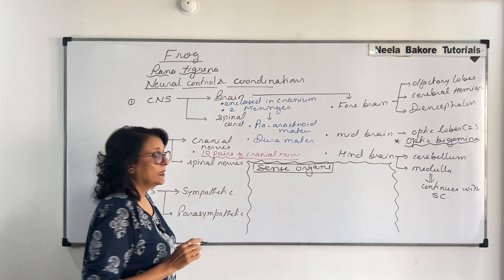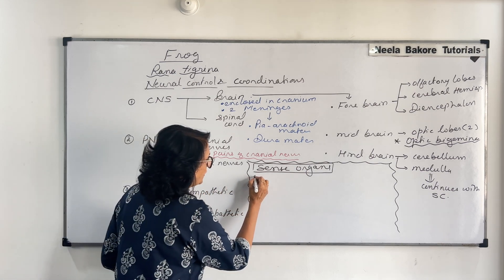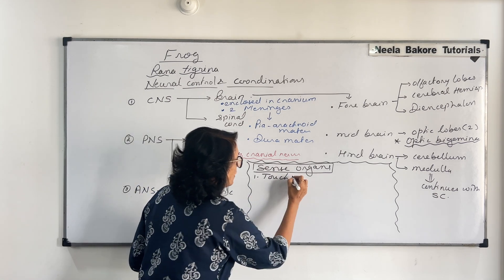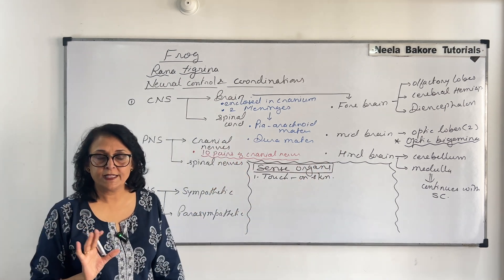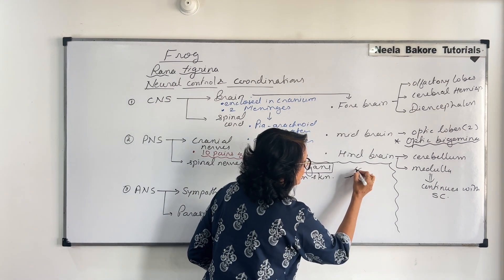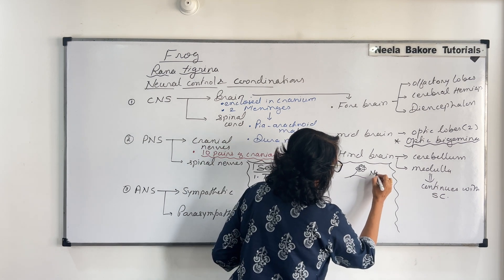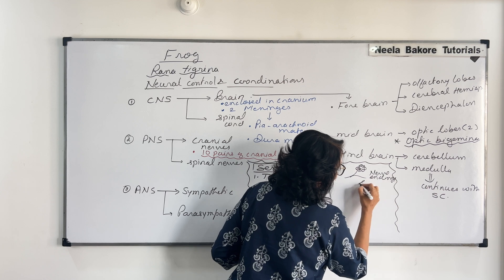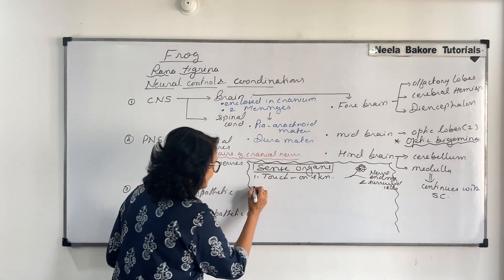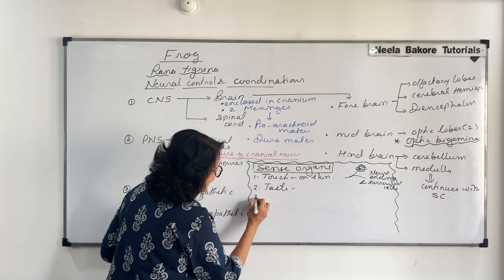Frogs have 5 different types of sense organs. Three out of which are not very well organized, and two are very well organized. The first sense organs help in the detection of touch. They are found on the skin and are not very well organized — they are essentially nerve endings covered by surrounding cells, an aggregation. These are not very well developed structures like eyes and ears. The second is for taste, also not very well organized and very similar in structure.